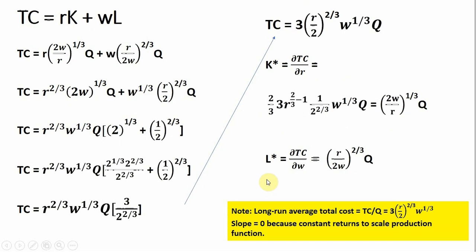And then finally, to get back the long-run conditional input demand for labor, take the partial derivative of total cost with respect to the wage. This one is not quite as difficult. Bringing down the one-third in front, basically you get three divided by three, so that cancels, and then W to the one-third minus one leaves us with W to the minus two-thirds. I just brought that into the denominator, and that is the long-run conditional input demand for labor that we saw earlier in this video.